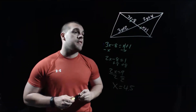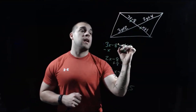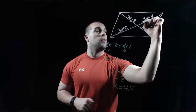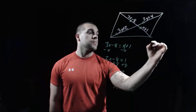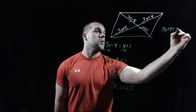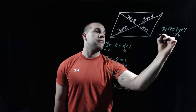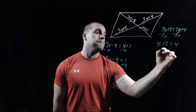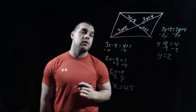The bottom-left piece and top-right piece of the diagonal are labeled with y expressions and are also congruent to each other. Setting them equal: 3y plus 2 equals 2y plus 4. Subtracting 2y gives y plus 2 equals 4. Subtracting 2 from both sides gives y equals 2.